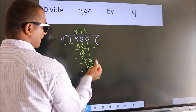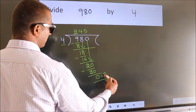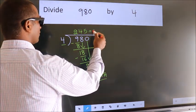No more numbers to bring it down. So we stop here. This is our remainder. This is our quotient.